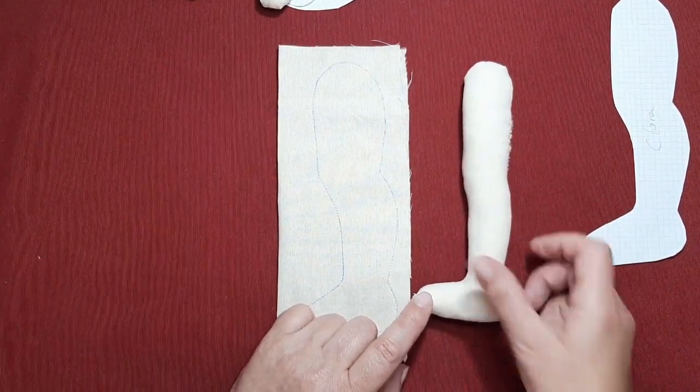Te voy a poner los alfileres para que lo veáis mejor. ¿Veis? Y estos serían las manguitas. Y esto sería el escote delantero y espalda. Primero vamos a coser las mangas. Vamos a coser el volante de abajo. Y luego ya uniremos las mangas. Lo que nos sobra de las mangas con el vestido. De esta forma.